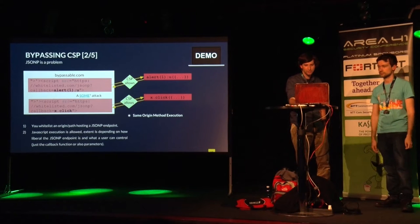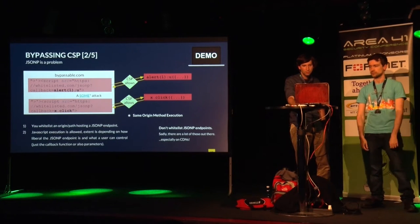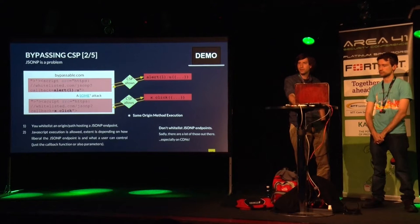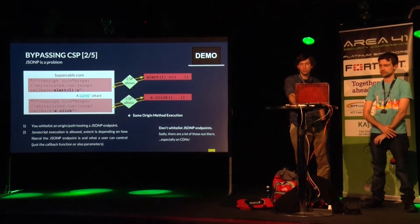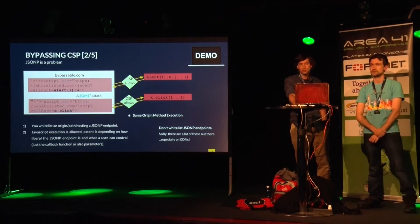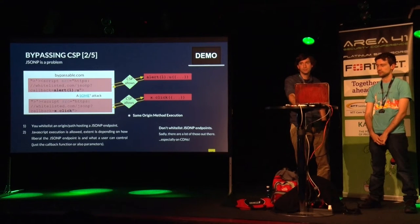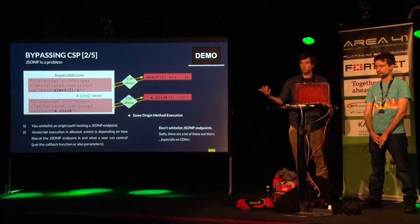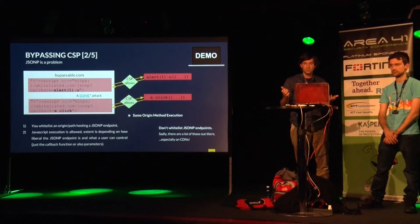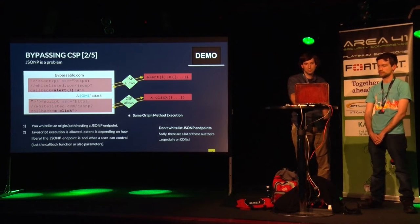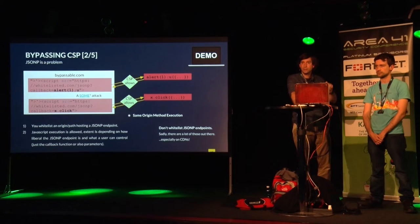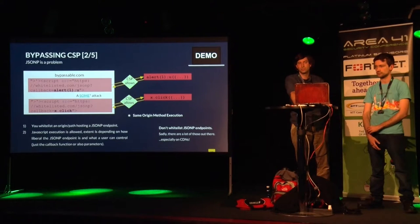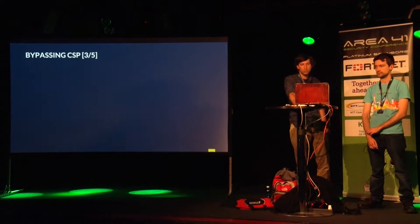The advice would be: don't whitelist JSONP endpoints - which is tricky because they are in many places, usually where all the CDNs are. And usually you actually want to whitelist CDNs because you're sourcing stuff from them. Sometimes you can't really get fully rid of them, and sometimes you actually need the endpoint with JSONP - for example, if you want to use the Maps widget.